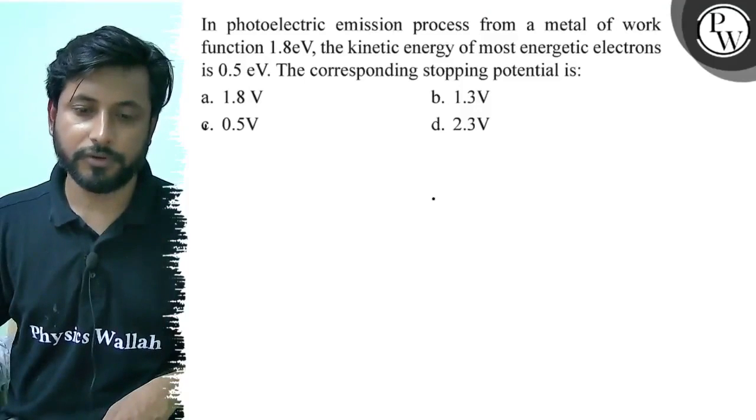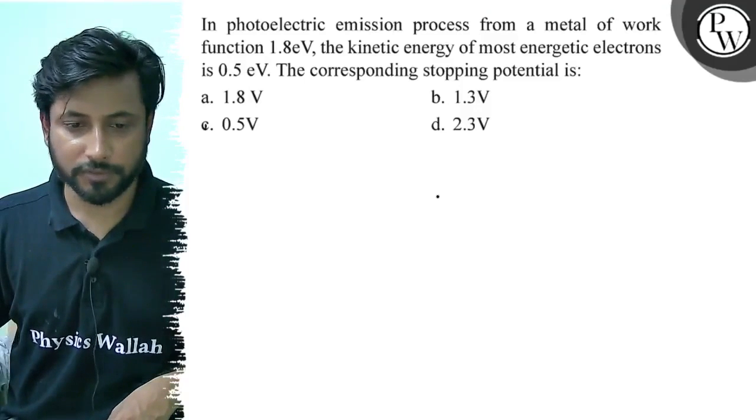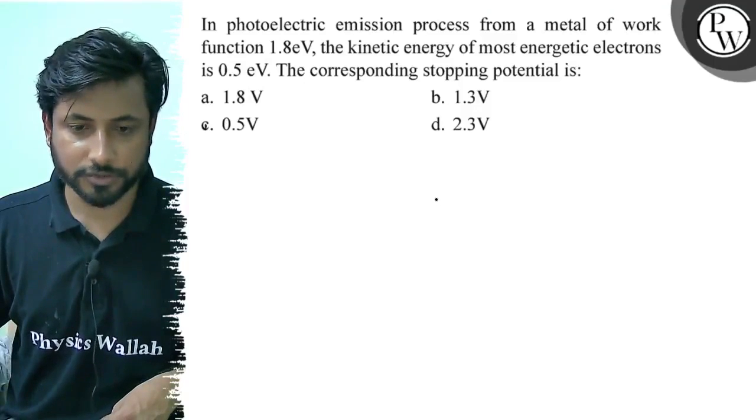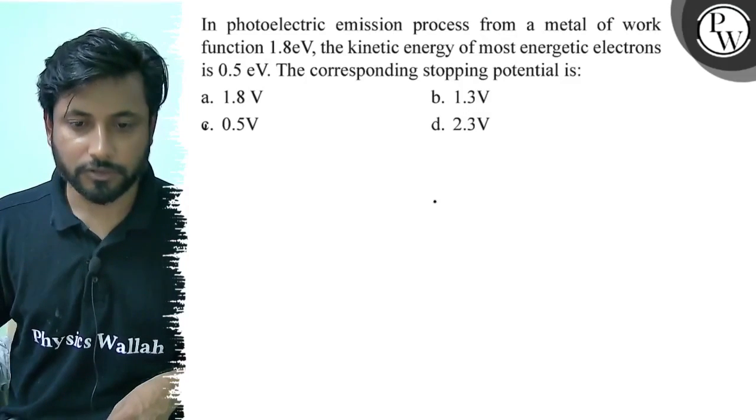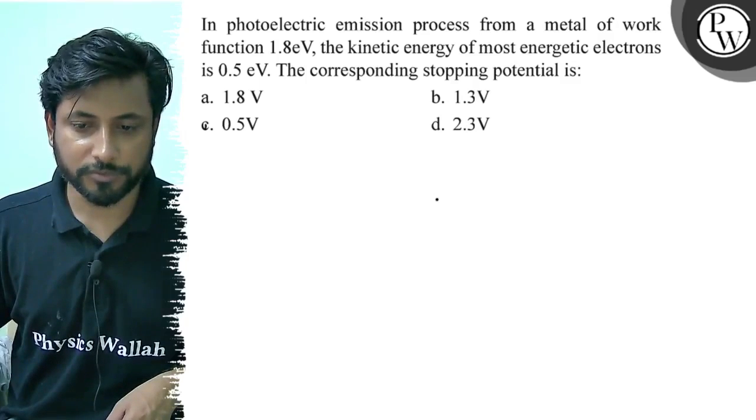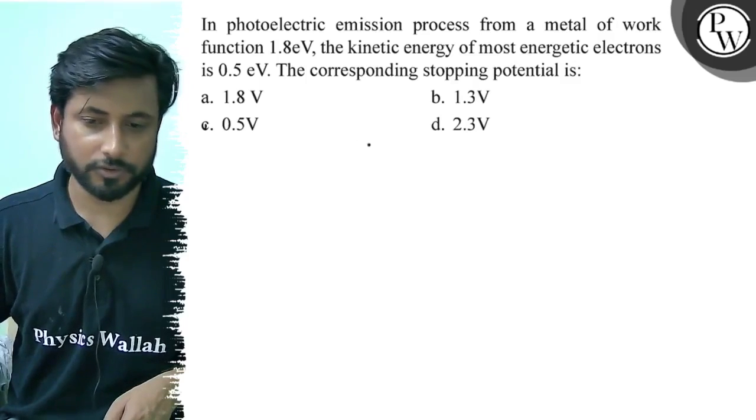Hello, let us see this question. In a photoelectric emission process from a metal of work function 1.8 electron volt, the kinetic energy of most energetic electrons is 0.5 electron volt. The corresponding stopping potential is: option a) 1.8 volt, option b) 1.3 volt, option c) 0.5 volt, option d) 2.3 volt.